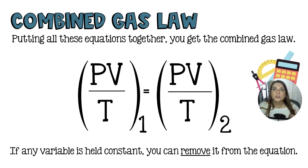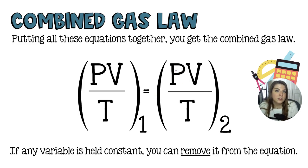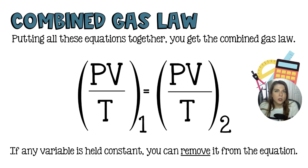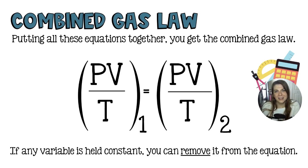Be mindful of your units. For pressure you can use atmospheres or kilopascals — no conversion needed as long as units match on both sides. Volume can be milliliters or liters, again just consistent on both sides. Temperature must be in Kelvin. Aside from that, it's just calculator work. Leave any questions in the comments, subscribe so you don't miss the next lesson, and I'll see you there.